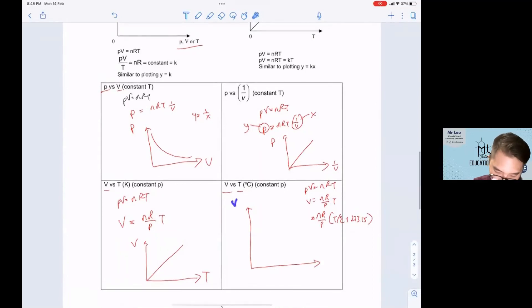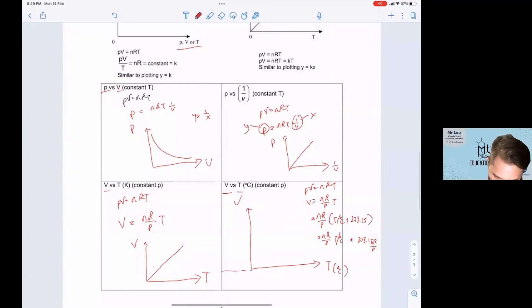Therefore, if you put V as your y-axis and temperature in terms of degrees Celsius as your x-axis, we can rewrite this as... This will be your y equals mx plus C. This will be your C. So this graph will be shifted upwards. It will still be a straight line graph, but it will be shifted upwards.